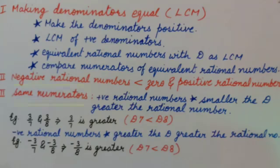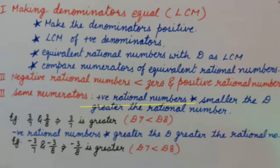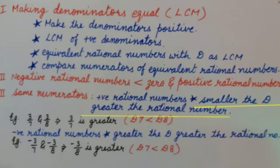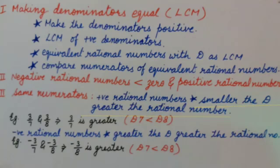The third method applies when rational numbers have the same numerators. If the rational numbers are positive, we look at their denominators. Smaller the denominator, greater the rational number — meaning if the denominator of rational numbers with the same numerator is smaller, that rational number will be greater.